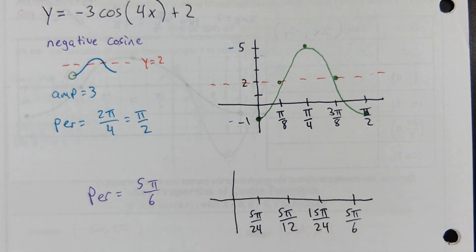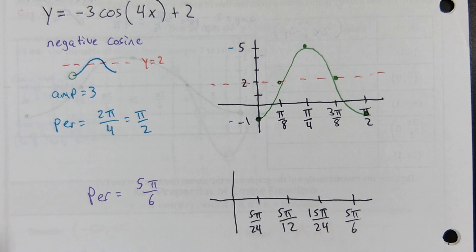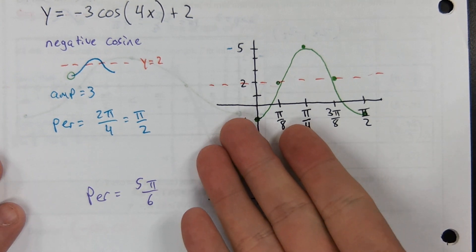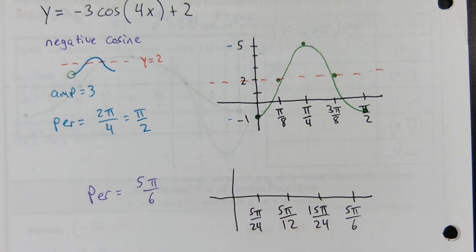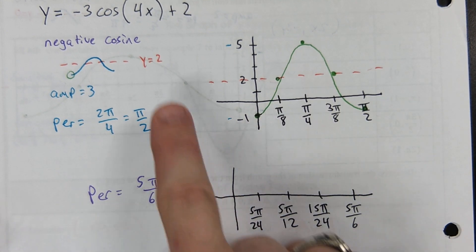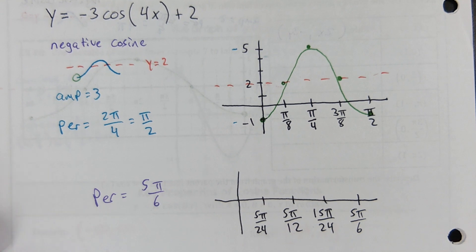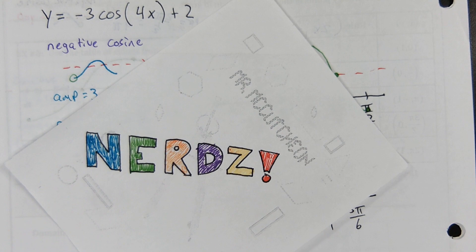Phase shifting is the only thing that can really throw a wrench in the system. The phase shift doesn't necessarily play nice with the quarters of the period length. If I phase shift by π/8 it's easy — it just moves a dot. But if I phase shift by something like π/3, it doesn't line up nicely with the quarter-period marks, and common denominators make things complicated. But that's for another day.